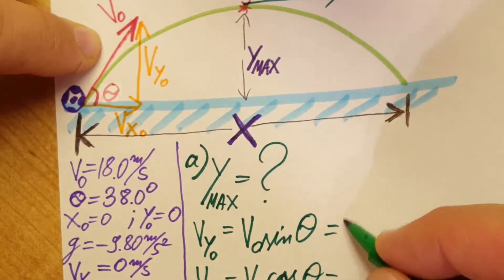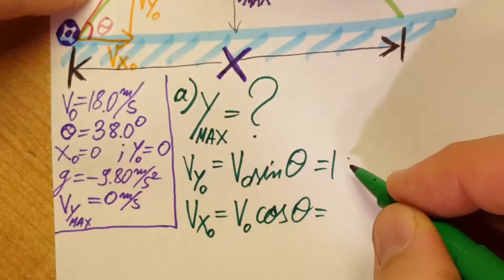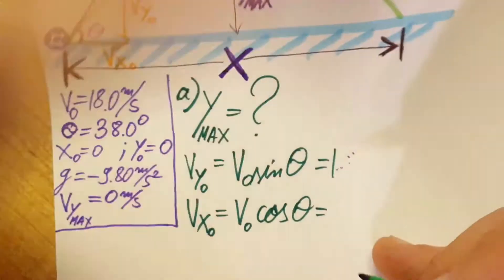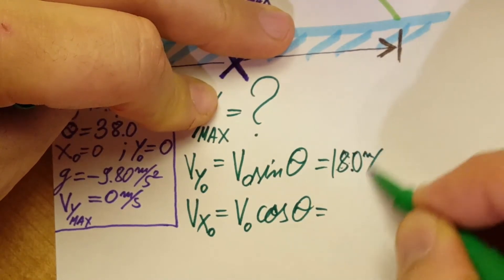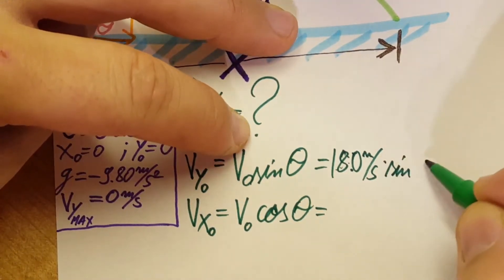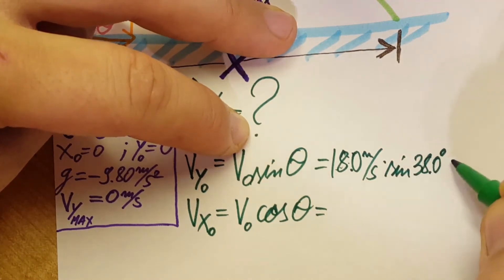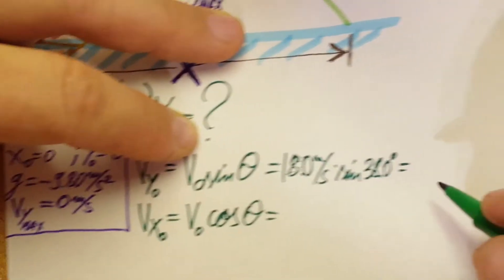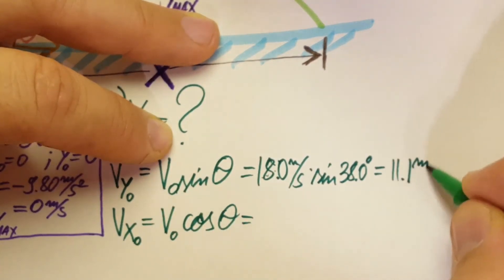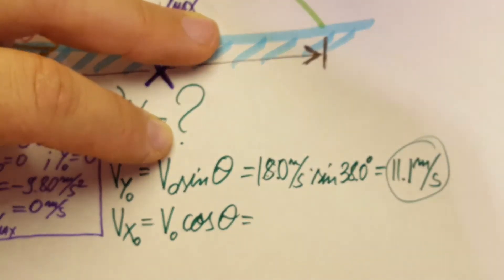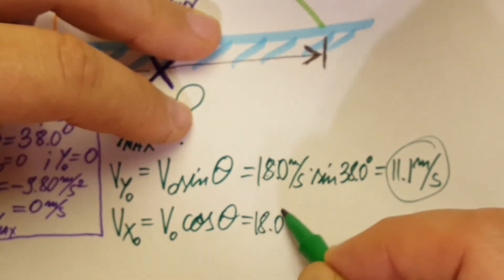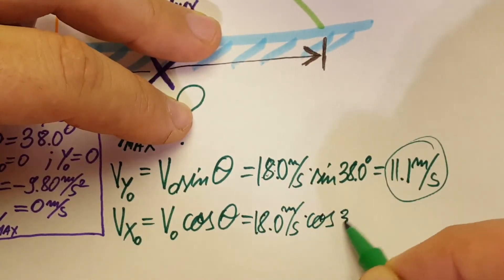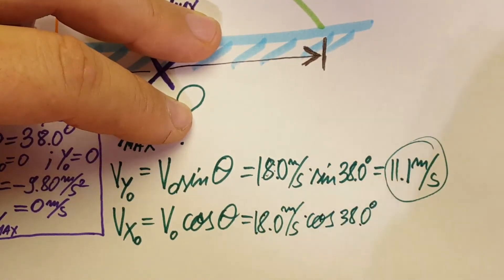Now we have these, so all we have to do is plug in and find the values. 18.0 meters per second times sine of 38 degrees. This will give us a value which is 11.1 meters per second. I'm gonna circle this because this will be an important value.